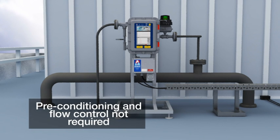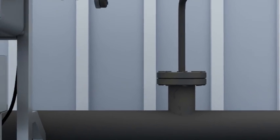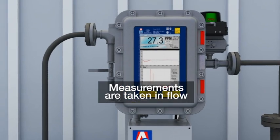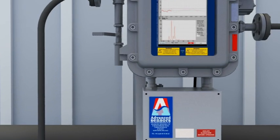Our side stream products are ideal for ease of installation where no preconditioning and no flow control are required. Simply tap into an existing sample point, allow flow through the analyzer where measurements are taken in flow and then send flow back to process or drain.